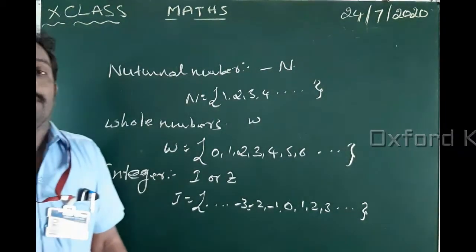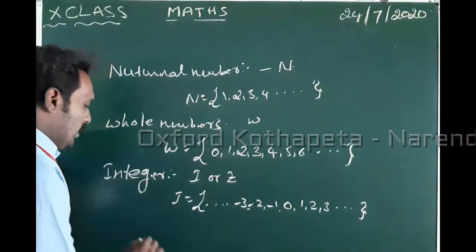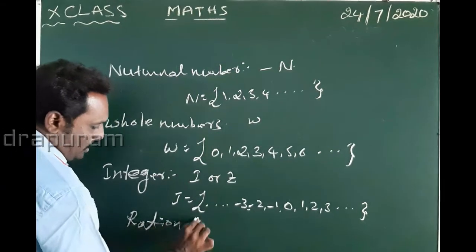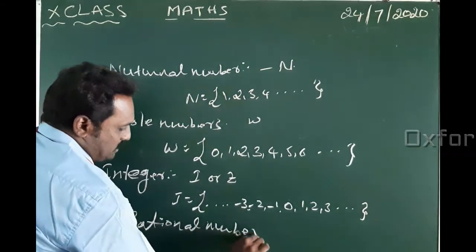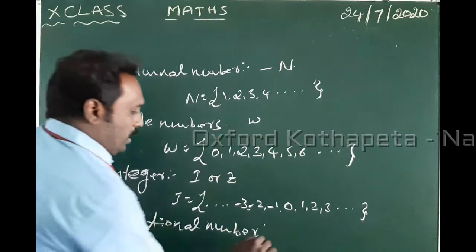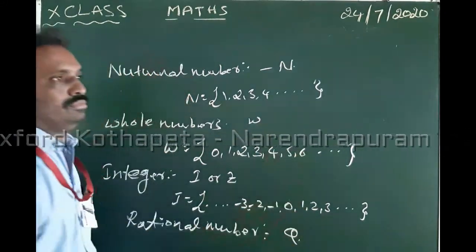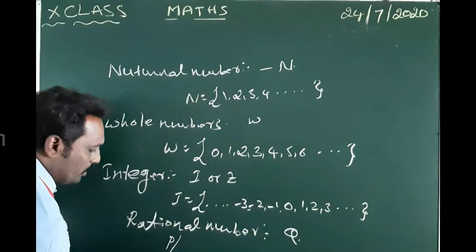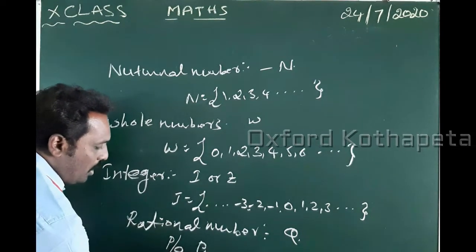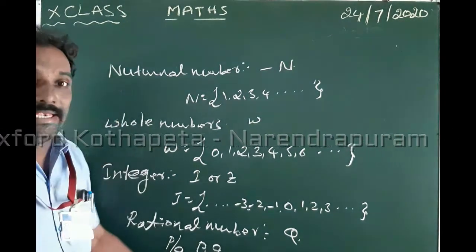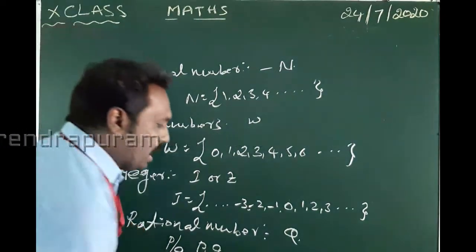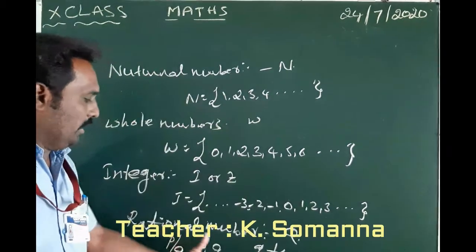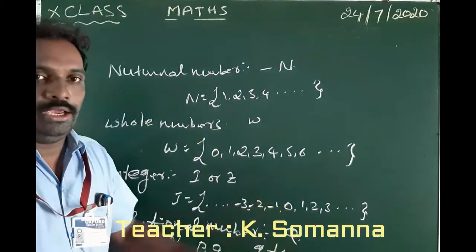Next is rational numbers. Rational numbers are denoted by Q. They are of the form p/q, where p and q are integers and q is not equal to zero. This is called a rational number, denoted by Q.